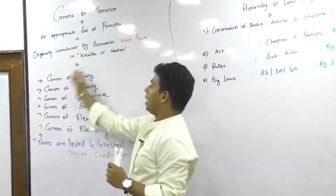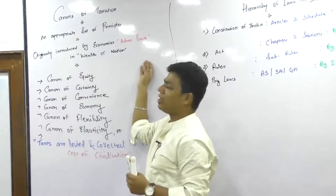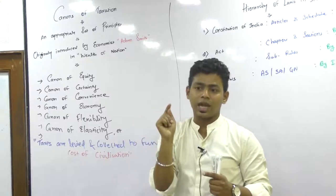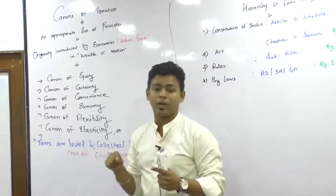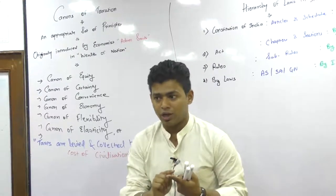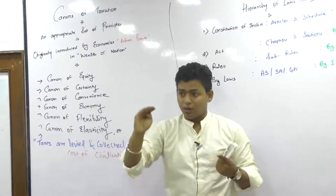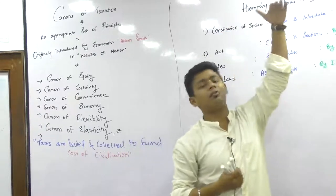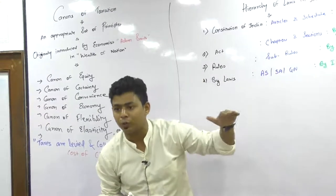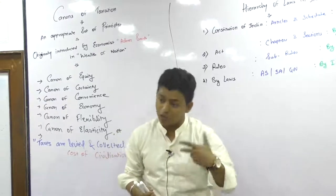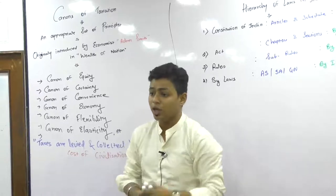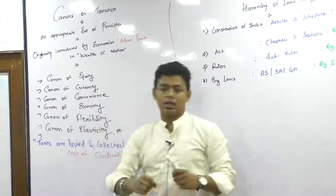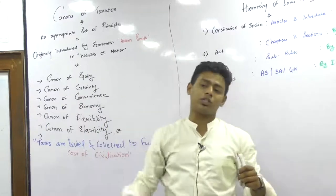The first canon is canon of equity. Canon of equity means taxes should be in progressive form - the rate of tax should increase with an increase in income. People with higher income should pay higher taxes, people with middle class should pay middle-level taxes, and people with lower income should pay lower taxes or not pay taxes at all. Every country should have a progressive system of taxation - that is the canon of equity.